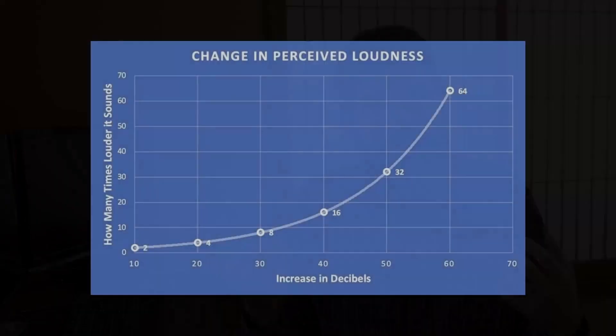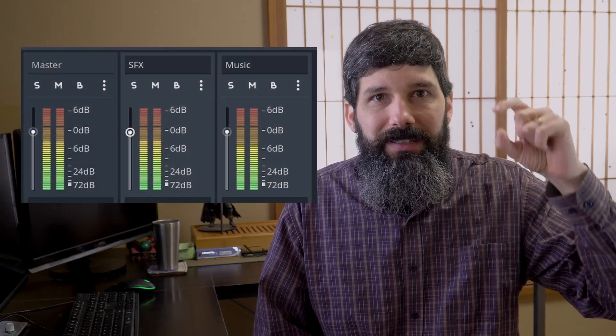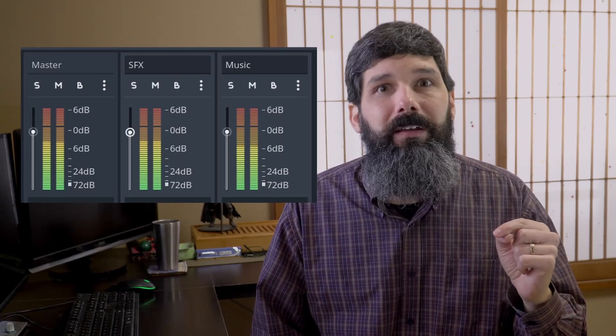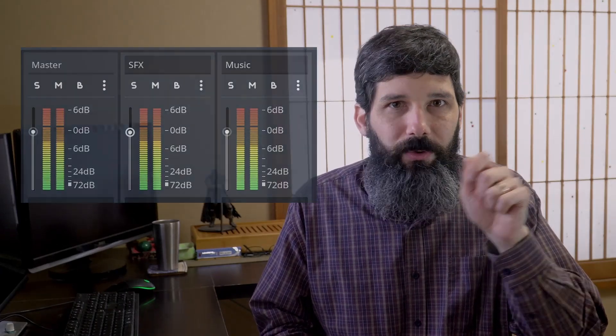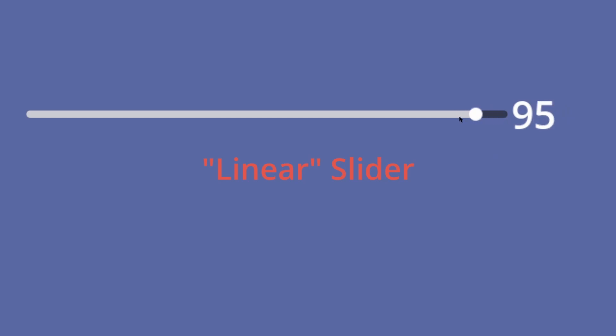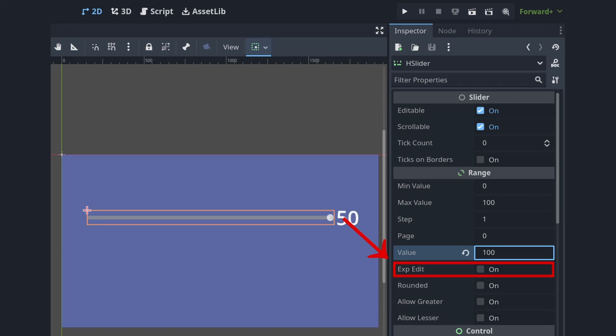Speaking of volumes, did you know that decibel is an exponential value? That means that the perceived sound looks a little bit like this. The quieter the sound, the more you have to change the decibel value to notice the difference. Another way of looking at it is looking at Godot's soundbar. If you notice, there's as much space between 0 and 6dB as there is between 6 and 24dB. That means if you implement a linear volume slider, the user will feel like it either does way too much or nothing at all.